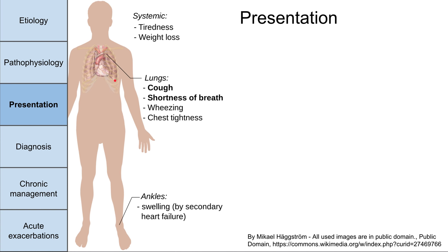How does COPD present in the clinic or hospital? It all boils down to cough and shortness of breath. Systemically, they might be tired and have weight loss — that's the pink puffer picture. In the lungs: cough, shortness of breath, wheezing, chest tightness. The blue bloater picture shows here with ankle swelling secondary to right heart failure and cor pulmonale. So that's a lot of pathophysiology for a relatively simple presentation of cough and shortness of breath.